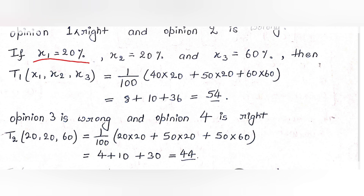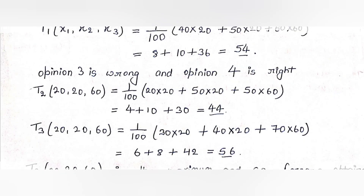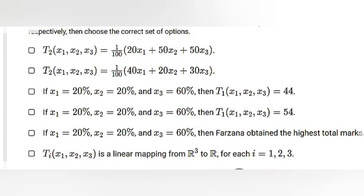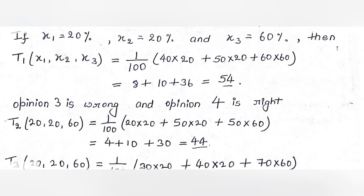If we take x1 = 20%, x2 = 20%, and x3 = 60%, let's calculate T1, T2, and T3. For T1: T1 = (1/100)(40×20 + 50×20 + 60×60) = 54. Comparing with the options, Option 3 states T1 = 44 which is wrong, and Option 4 states T1 = 54 which is correct. So Option 4 is right and Option 3 is wrong.